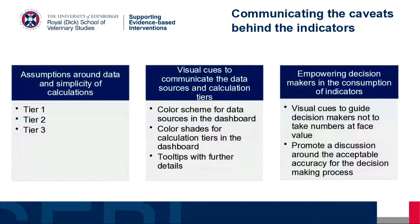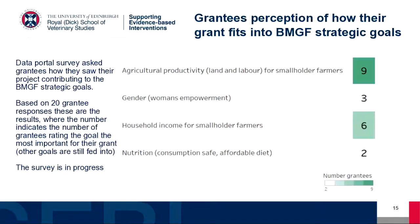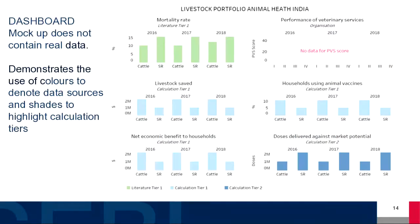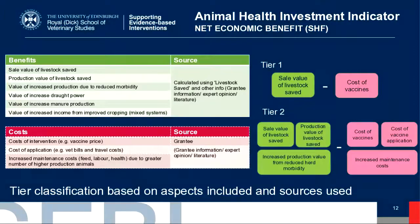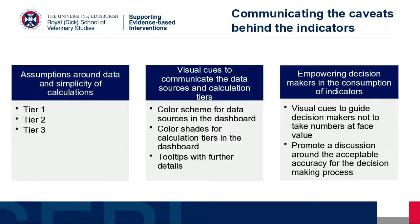Likewise with economic benefit — it could be a very simple calculation with very basic data, or it could be a lot more complex with a lot more information feeding in. We're going to try to also communicate the context behind those numbers with some sort of tiered system for calculations. We're creating visual cues — initially starting with colors — to indicate data sources and perhaps shading around those numbers. We want to empower the people using those dashboards to understand that there is a number, but there are caveats behind those numbers.